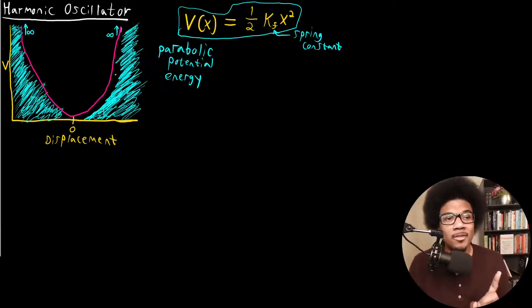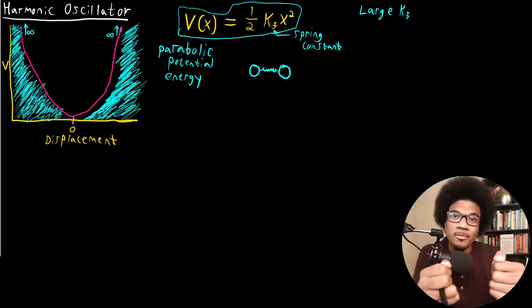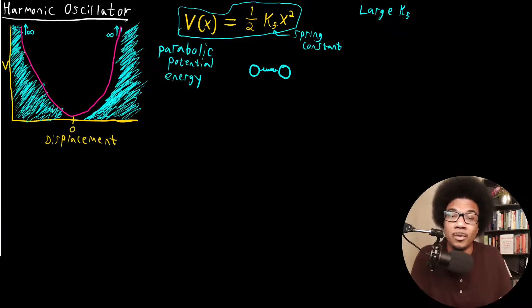Now, the other question that we might want to think about is what happens when we have different spring constants. For example, what happens if we have a large spring constant? Let's think about what this means physically. If we go back to our physical model of two masses on a spring, then a large spring constant means that you have a very stiff spring, which means it's going to be very difficult to pull those masses apart.